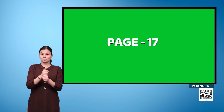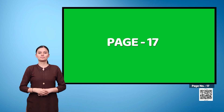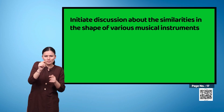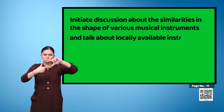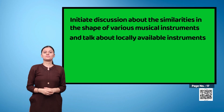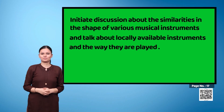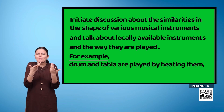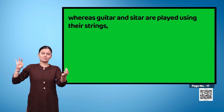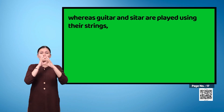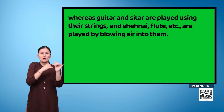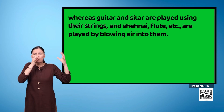Page 17 — Teacher's note: Initiate discussion about the similarities in the shape of various musical instruments and talk about locally available instruments and the way they are played. For example, drum and tabla are played by beating them, whereas guitar and sitar are played using their strings, and shehnai and flute are played by blowing air into them.